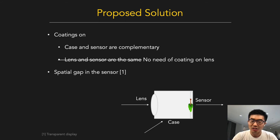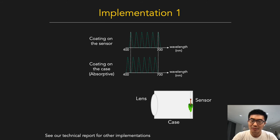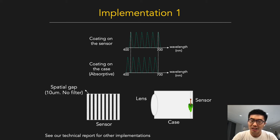After further thought, there is actually no need to put coatings on the lens. The first implementation method is we can use absorptive filters on the sensor and case with opposite properties. There is a special gap in the sensor with width of about 10 micrometers, and there is no filter on the special gap.